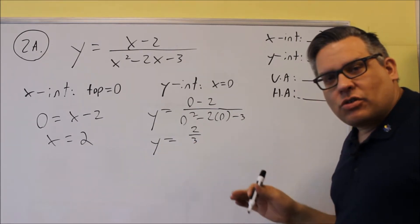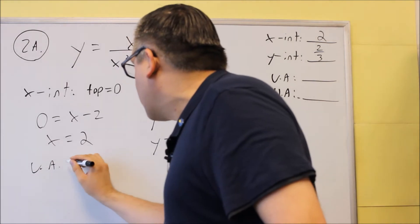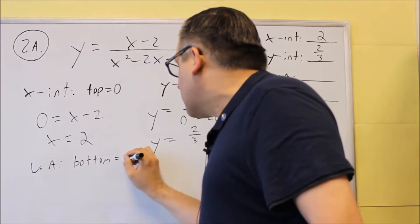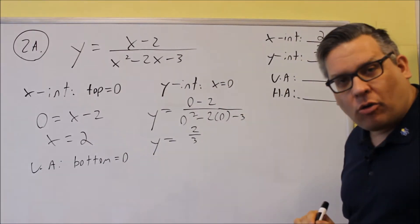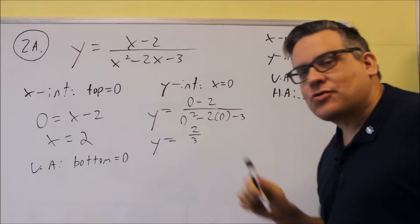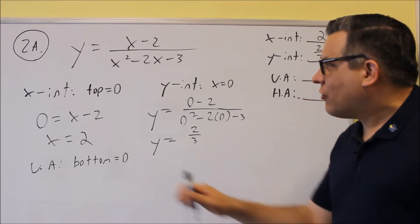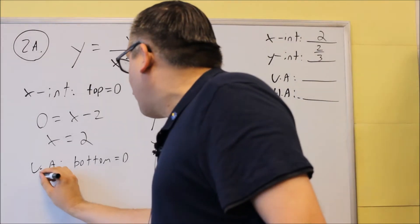So that's the intercepts. Now we also want to do the vertical asymptotes. The vertical asymptote, we talked about this in problem number one, you solve for that by setting the bottom equal to zero. So top is used for x-intercept, the bottom is used for the vertical asymptotes. Now for the bottom one, we need to factor that one.